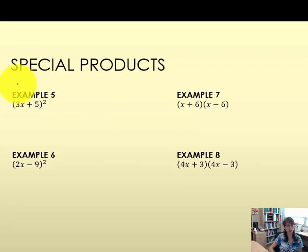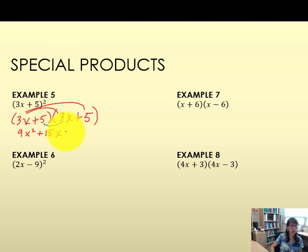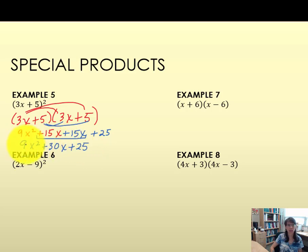Here we have what are called special products — the binomial is raised to the power of 2, meaning we have two identical binomials to multiply. We expand it first, then distribute. So 3x times 3x is 9x squared; 3x times 5 is plus 15x. Then distributing 5: 5 times 3x is 15x and 5 times 5 is 25. The middle terms double, so we end up with 9x squared plus 30x plus 25. The first and last terms are perfect squares.